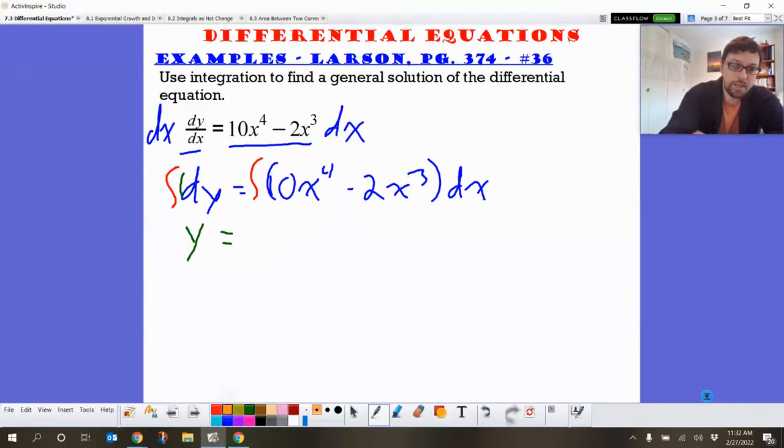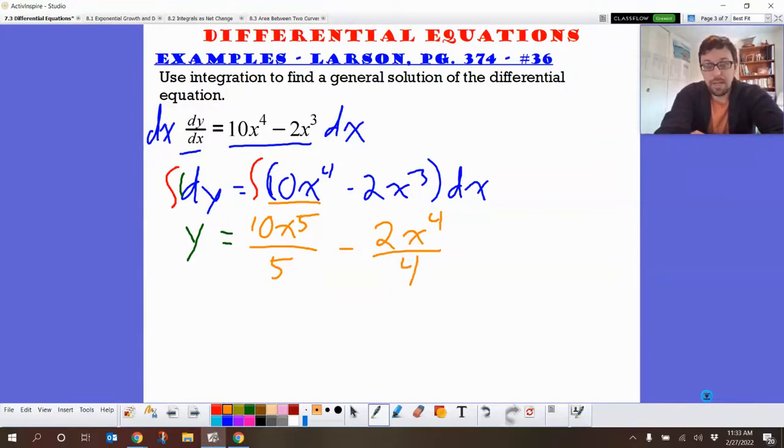Because that dx is telling us what variable we're finding the antiderivative with respect to. When we work on the other side, our antiderivative of this is going to be 10x to the fifth over our new exponent, which is 5, minus 2x to the fourth divided by our new exponent, which is 4. Then, since it is an indefinite integral, we do not know what we're integrating between, we stick a c on the end of it.